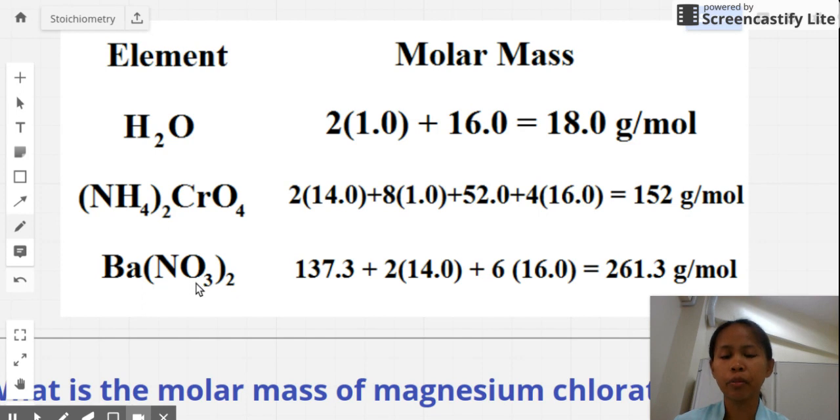And the third example is barium nitrate. So the same thing, you see a parenthesis, there's a 2 outside the parenthesis. So distribute that to the elements inside, not including barium. So barium is just 1, so it has a mass of 137.3. For nitrogen, there are 2 of that. So 2 times the molar mass of nitrogen. And then 2 times 3, so you got 6 all in all for oxygen. So that is 6 times 16. Putting all of this in the calculator will give you 261.3 grams per mole.